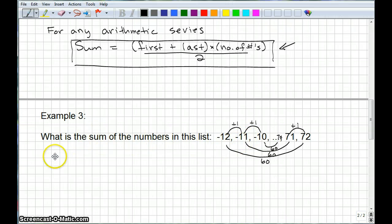So, all we need to do to find the sum is take the first number, which is negative 12, plus the last number, 72, times the number of numbers. Okay, we've got to figure that out. So, let's pause here and figure that one out.